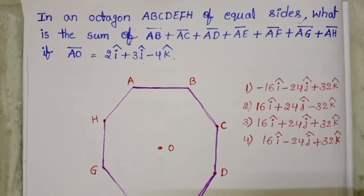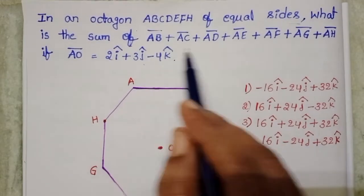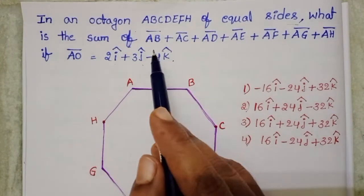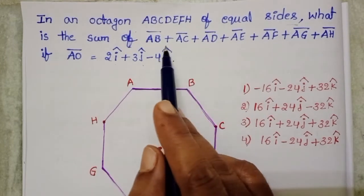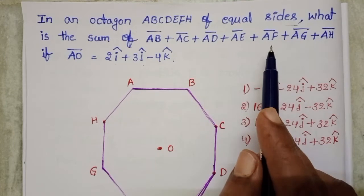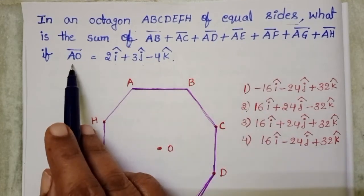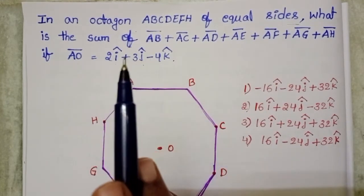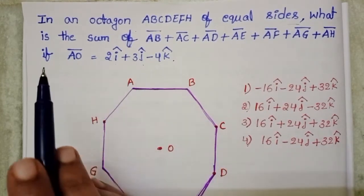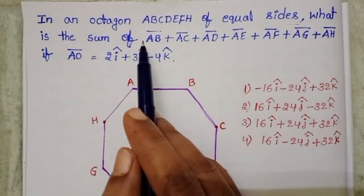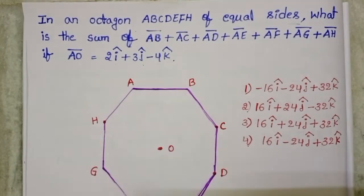To find out the sum of the given vectors, we use the law of vector addition. Here AB bar, AC bar — all these vectors are converted in the form of AO bar. Why? Because in the given problem, we know the value of AO bar only. First we want AB bar.